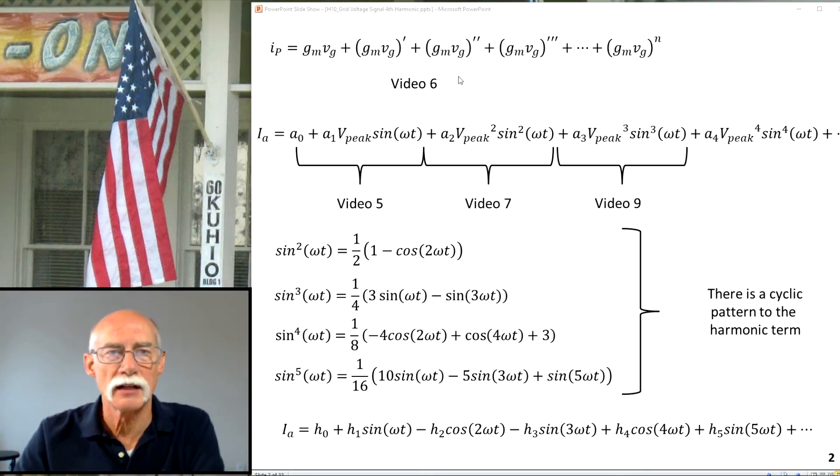Video six I covered at the top. Video five, video seven, video nine. In this video, I'm going to talk about the fourth term. As I've shown in the last video, the fourth term contains cos four omega t. That is the fourth harmonic. I'm not going to ever get to the fifth harmonic because this is a stopping point.